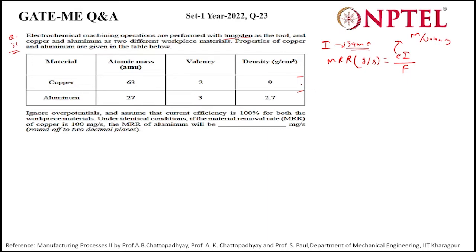For copper, the MRR is given as 100 milligrams per second, which we convert to grams. E for copper is 63/2. F is Faraday's constant, 96500. Substituting into the formula MRR = E·I / F, we solve for the current I, which comes out to 306.35 amperes.